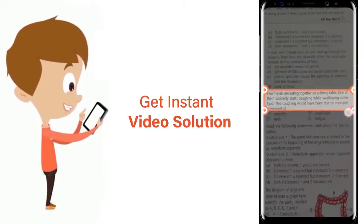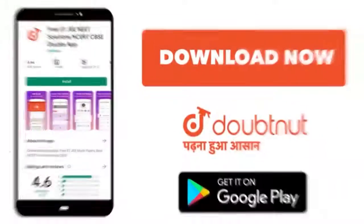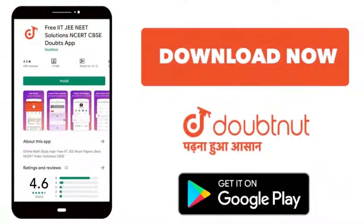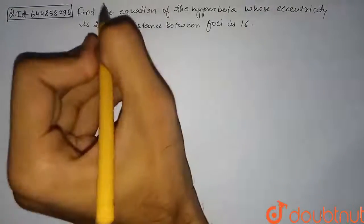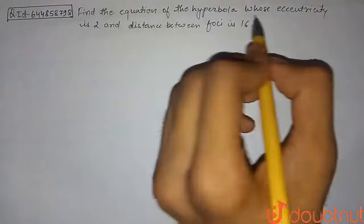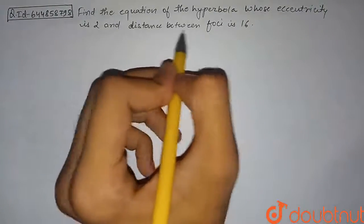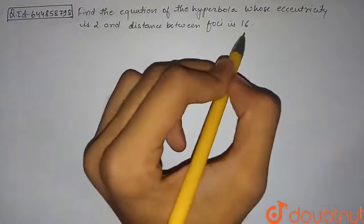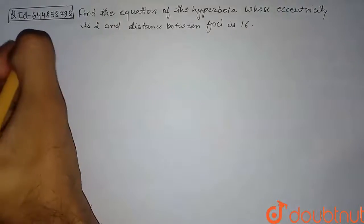Hello students, let's discuss the question: find the equation of the hyperbola whose eccentricity is 2 and distance between the two foci is 16. Let's begin with the solution of this question.